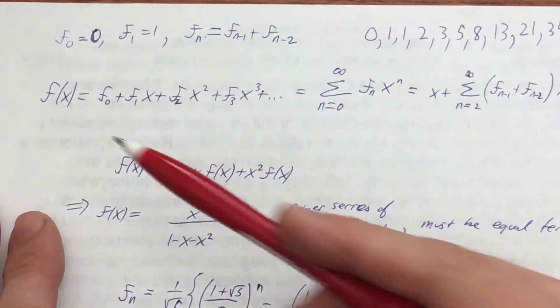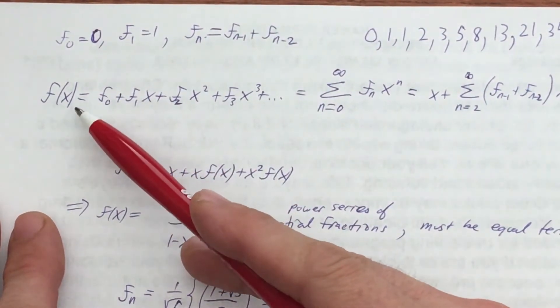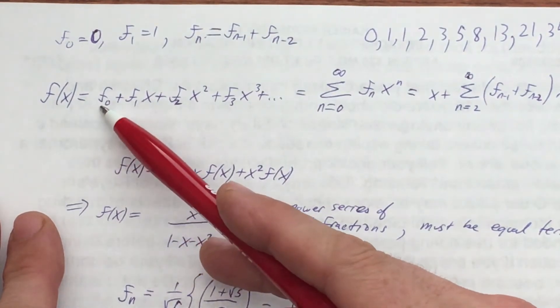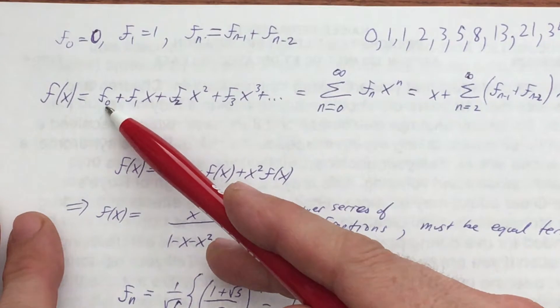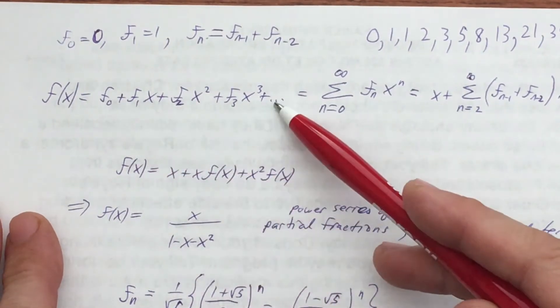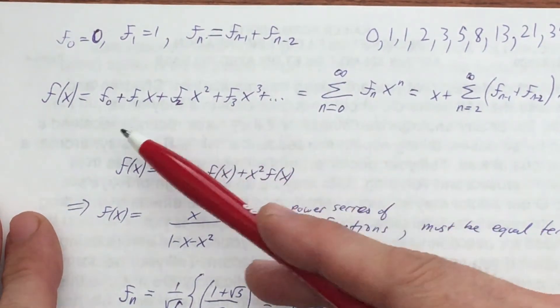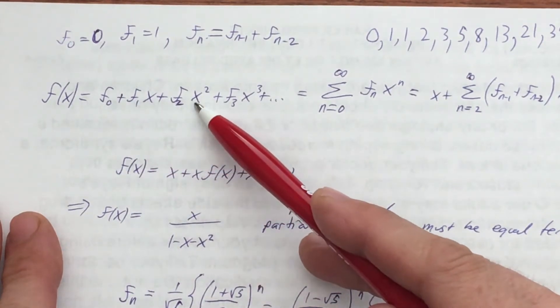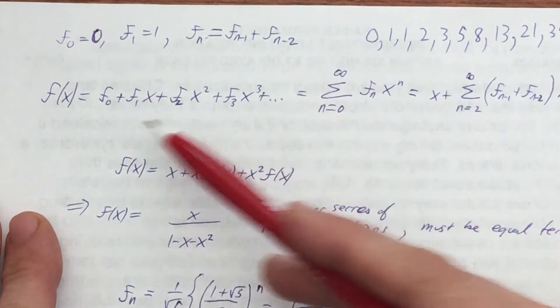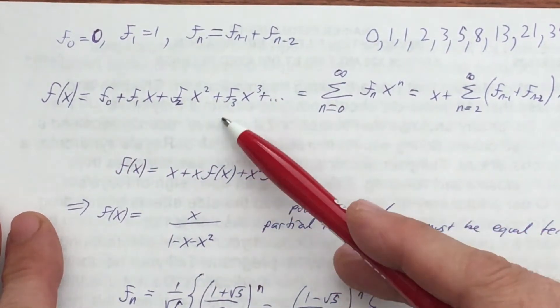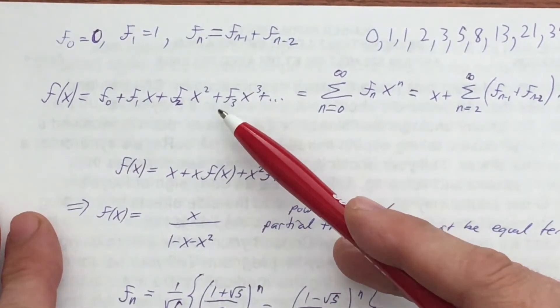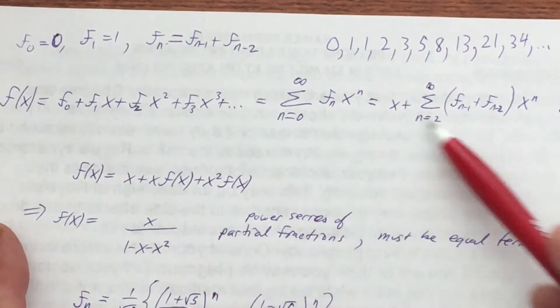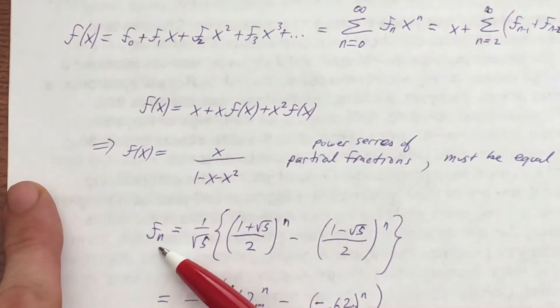So there's this really cool thing in mathematics called the generating function, which is the function you get when you use the coefficients of the sequence as the coefficients of a polynomial. So f sub 0 plus f1 times x to the 1 plus f2 times x squared plus f3 times x cubed. So we construct an infinite polynomial whose coefficients are from the sequence.